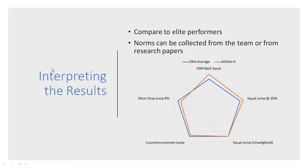Once we do that, we need to record the results and compare them to elite performers. The elite norms can either be collected from the team or past teams — for example, the strength and conditioning team may have normative data collected over several years that they can compare to. Alternatively, norms can be collected from research papers or other publications. So we know where our athletes roughly need to be to perform at the elite level. In this example here, the blue marker represents the elite average, and Athlete A has been tested using those exercises in the power profile.